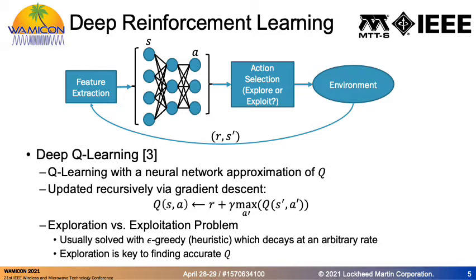The output of the Q function is fed into an action selection policy, which decides on which action to take. That action would affect the environment in some way, and you'd get a reward for that change and also a new state s-prime of the environment. To train the neural network, it's done with recursive updates via gradient descent, where the targets of the neural network for each training step are set to what's shown to the right of the arrow in the equation below.